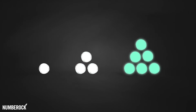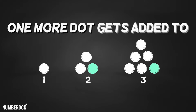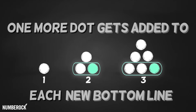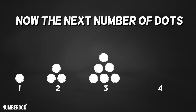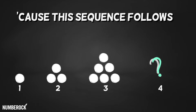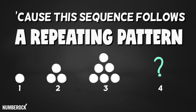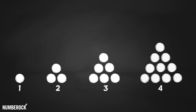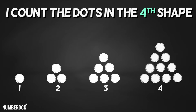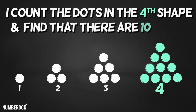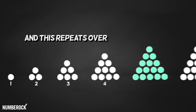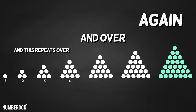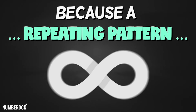One dot, three dots, then six in the third design. One more dot gets added to each new bottom line. Now the next number of dots I shall learn, cause the sequence follows a repeating pattern. So I make a drawing with my trusty pen. I count the dots in the fourth shape and find that there are ten. And this repeats over and over again, because a repeating pattern never ends.